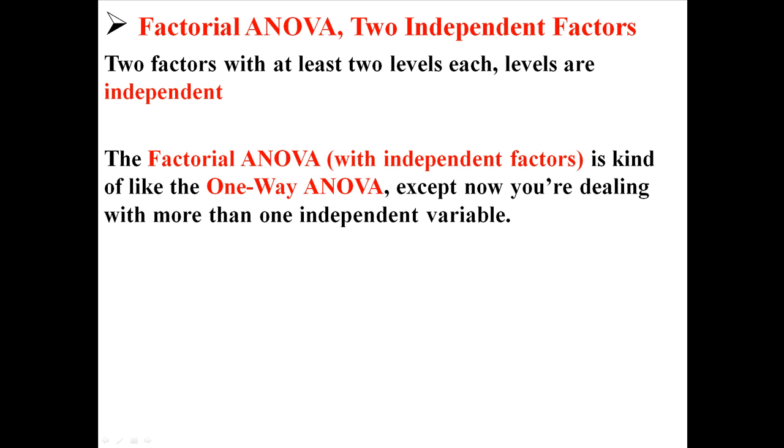The factorial ANOVA with independent factors is kind of like the one-way ANOVA, except now instead of having one independent variable, we're going to be working with two independent variables.